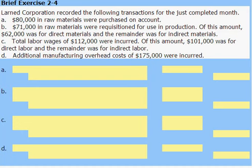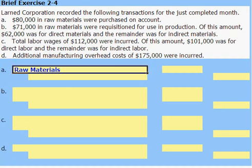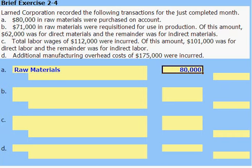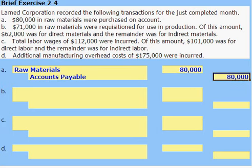Larning Corporation recorded the following transactions for the just completed month. $80,000 in raw materials were purchased on account. Raw materials is an asset and will increase that asset with a debit to raw materials for $80,000. If it's purchased on account, we will need to credit or increase accounts payable by $80,000.